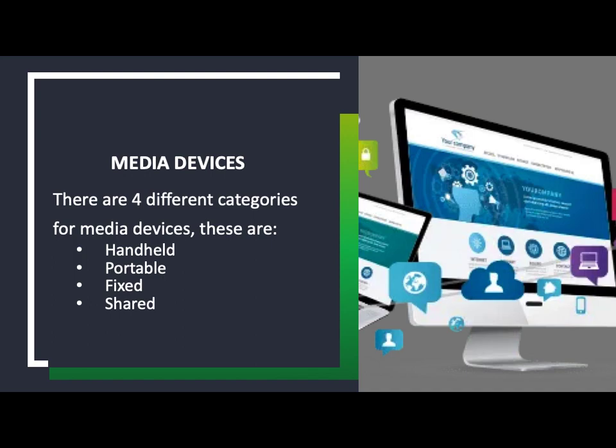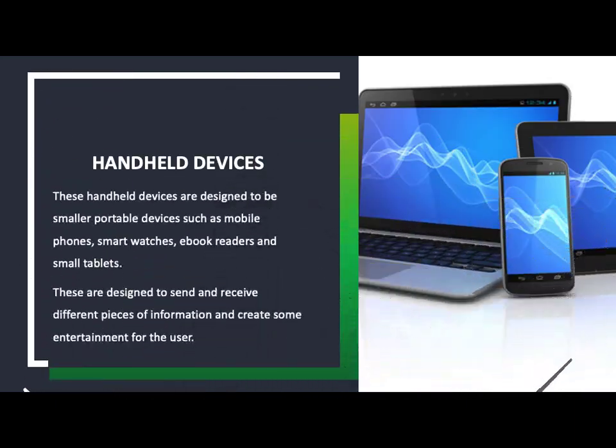Next are different device types: handheld, portable, fixed, and shared. Handheld is simply using a mobile phone — something small you can walk around with in one hand. Don't confuse this with a portable device, which is something bigger like a tablet or laptop. Handheld devices allow you to send text messages, instant pictures, and instant videos.